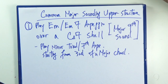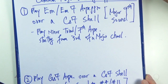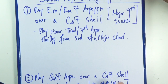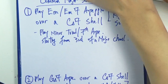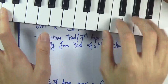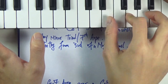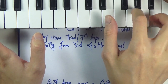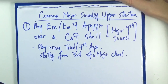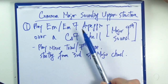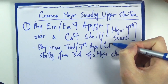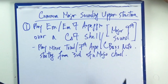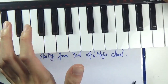The first one is playing an E minor or E-7 arpeggio or chord. An arpeggio means a broken chord — you play them separately. So E-7 as a chord would be played together, whereas an arpeggio would be played separately. The first example is playing an E minor or E-7 arpeggio over a C major seven shell.